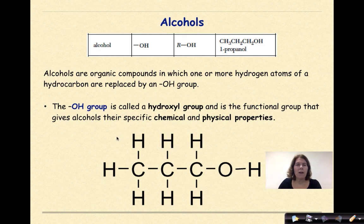Let's start talking about alcohol. This specific screenshot is from table R of your reference tables. You should have table R out right now and be able to see this right underneath the halides. Alcohols are organic compounds in which one or more hydrogen atoms of a hydrocarbon are replaced by an OH group.